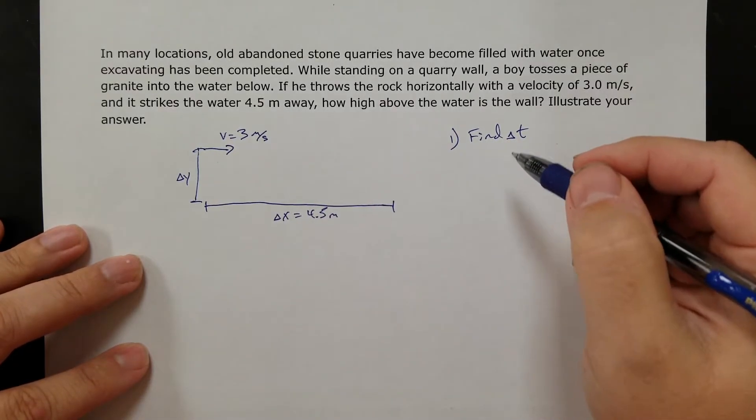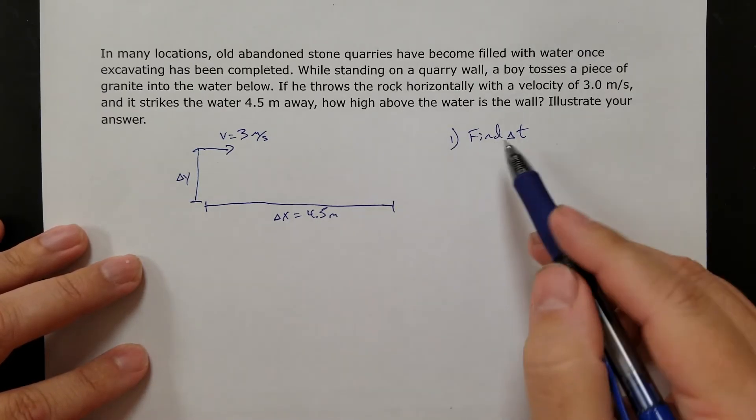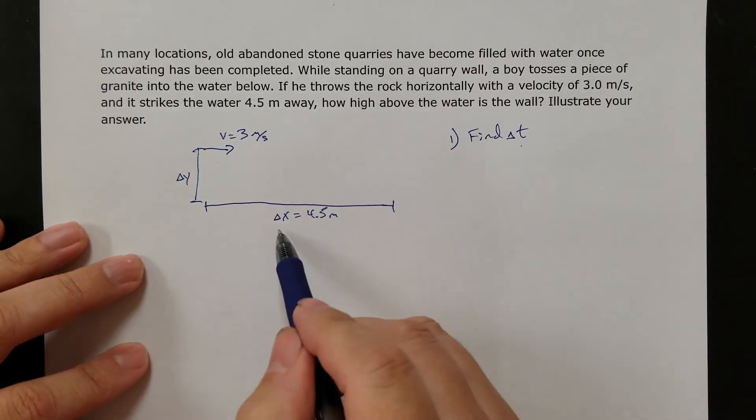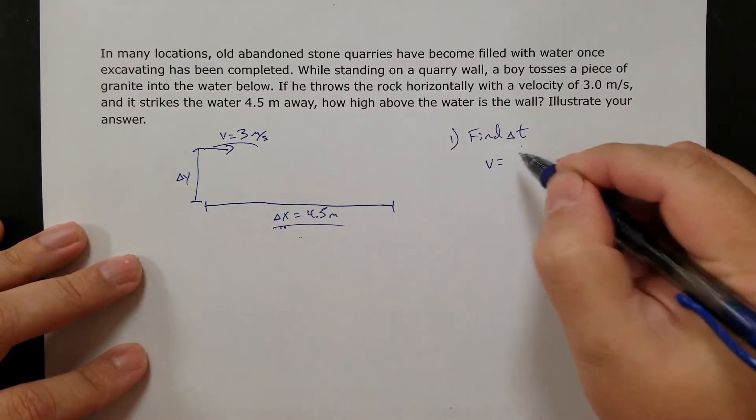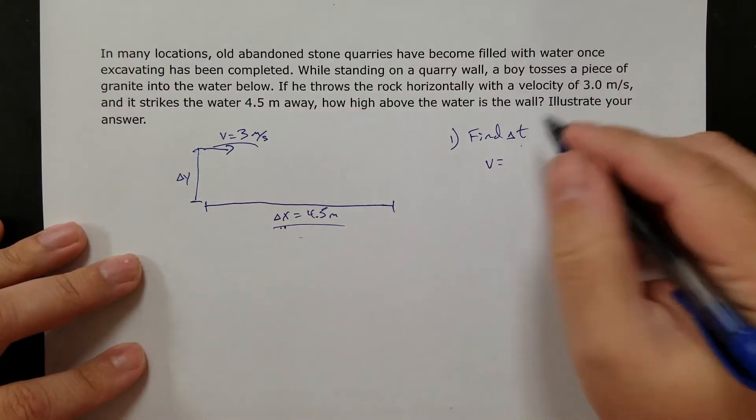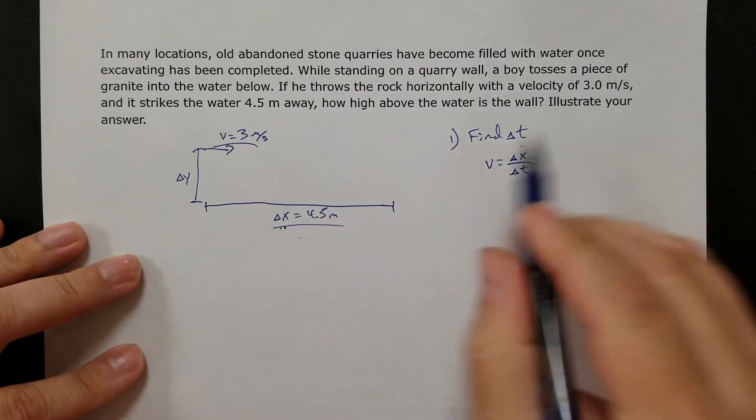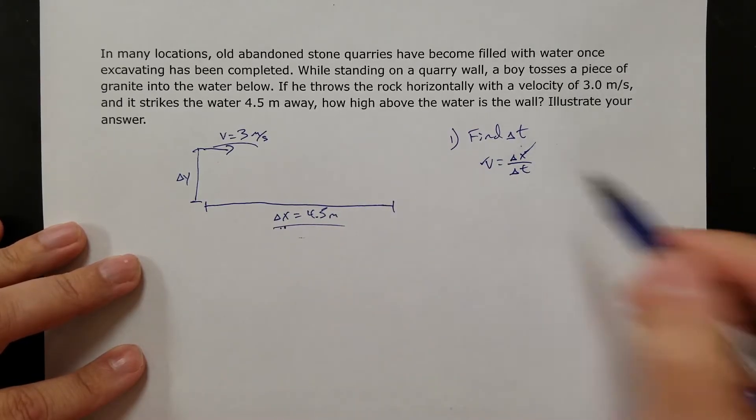So normally I would say, time is square root of 2y over g. But I don't have the height. I need to do this another way. So if you look at what you have, see how here I know my distance and I know my velocity. So if I just look at the x dimension first, I can take my non-accelerating velocity formula. Velocity is delta x over delta t. Hey, look, I know delta x, I know velocity. I could solve for delta t.